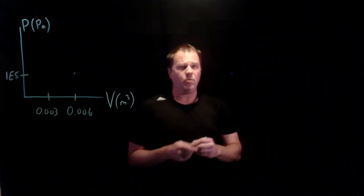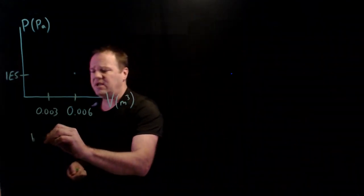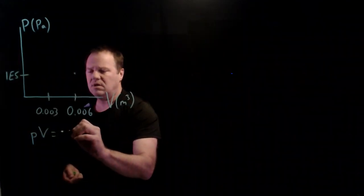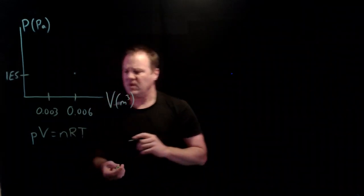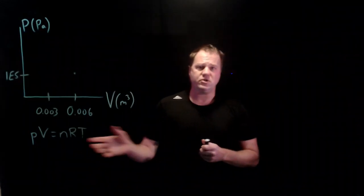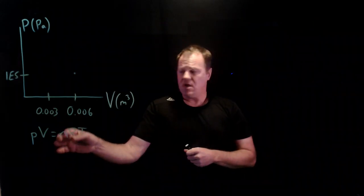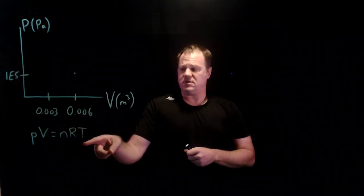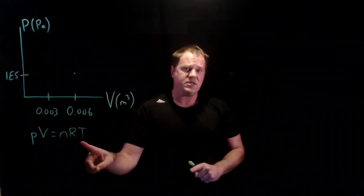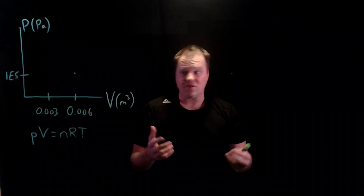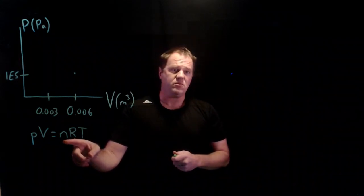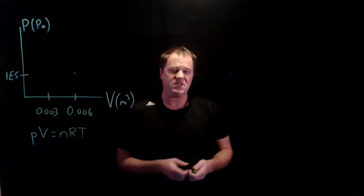So in an isothermal process, thinking about the ideal gas law, PV equals NRT. Assuming that this gas obeys the ideal gas law, the product pressure times volume has to remain the same because NRT is all staying the same. An isothermal process is by definition constant temperature. R is the ideal gas constant. And we typically assume the number of moles is constant because we have a sealed container.